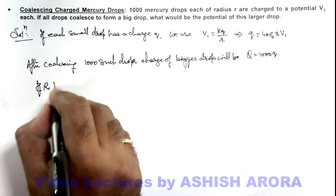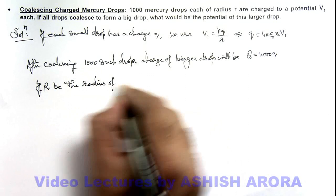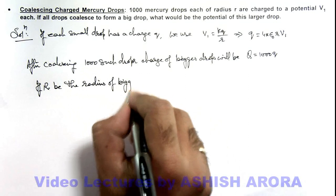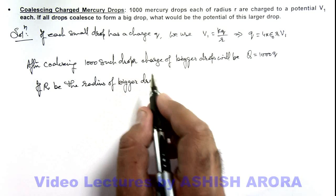If capital R is the radius of the bigger drop, which is made up by coalescing 1000 small drops, we can use volume conservation.